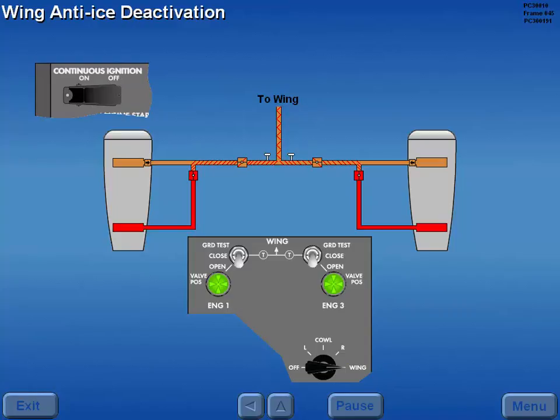When wing anti-ice is no longer required, place continuous ignition on and ensure the light selector is in wing. Moving the wing anti-ice switches to close momentarily extinguishes the valve position lights while the anti-ice valves are in transit. When the valves are closed, the valve position lights illuminate. After the wing anti-ice valves are confirmed closed, rotate the selector to off unless engine anti-ice is in use.